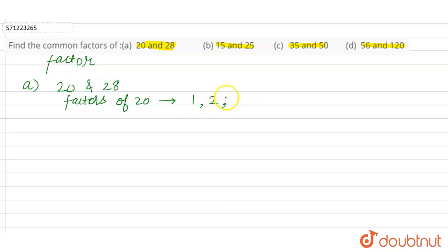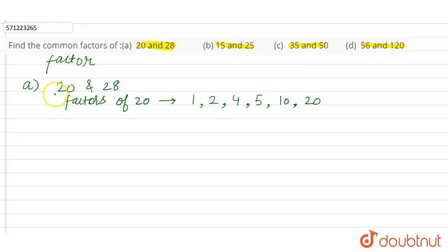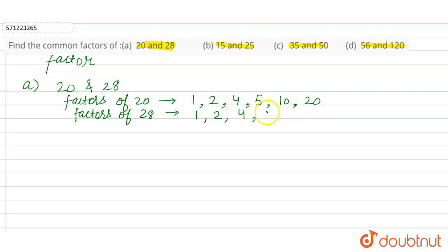3 is not a factor of 20. Then 4 × 5 = 20, so 4 is a factor. Checking all numbers one by one, we find 10 is also a factor, and then 20 itself. Now we write the factors of 28: 1, 2, 4...